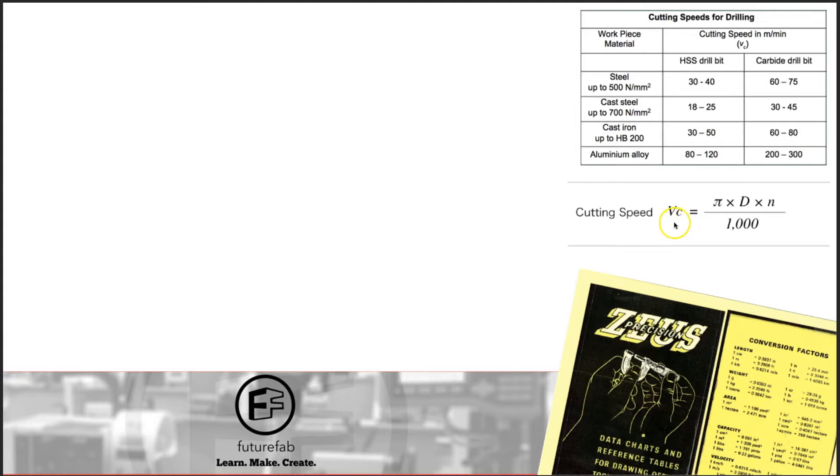The VC is known as the cutting speed and that basically is in imperial surface feet per minute or in metric it's meters per minute. And that's given for a combination of materials. For example, you'll have high speed steel cutters working in aluminium or carbide cutters working in steel or some various combination of cut material and coatings for that matter with different materials. And you can look that up in a chart.